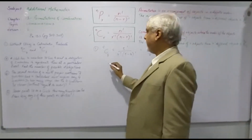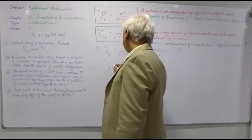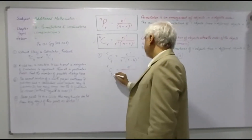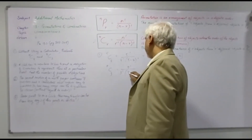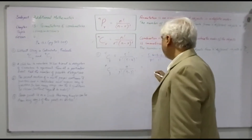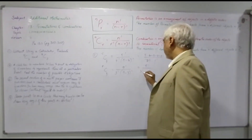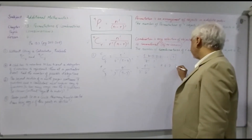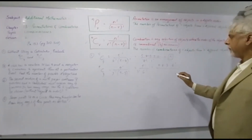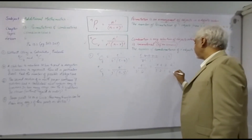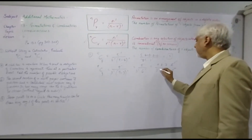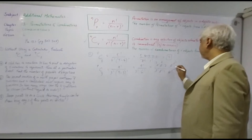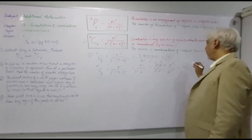The 4 factorial cancels out, leaving us with 5. Since 1 factorial equals 1, C(5,4) = 5. For the second part, C(9, 3): 9 factorial upon 3 factorial times 6 factorial. Writing 9 factorial as 9×8×7×6 factorial, the 6 factorial cancels. Then 3 divides into 9 giving 3, and 2 divides into 8 giving 4. So 3×4×7 = 84.